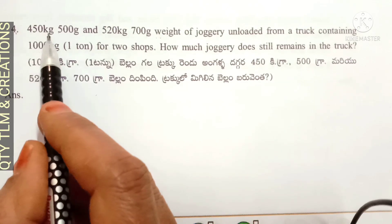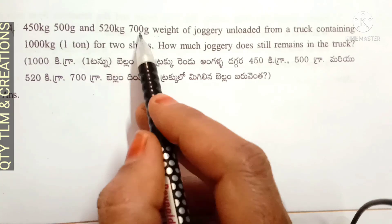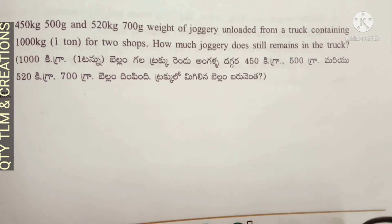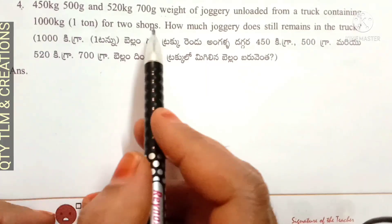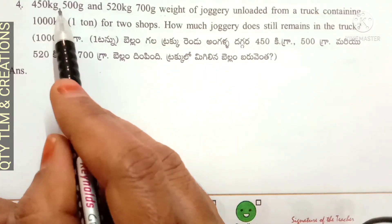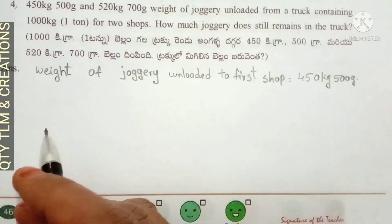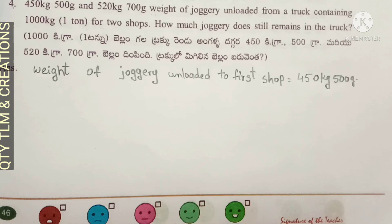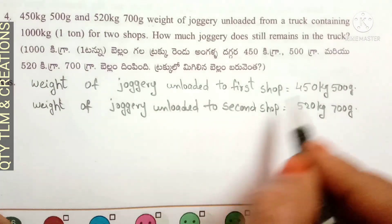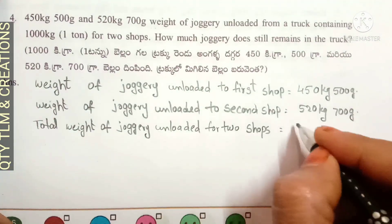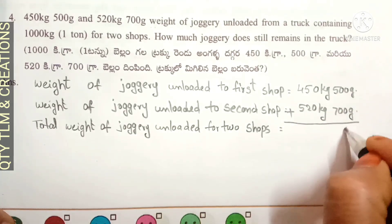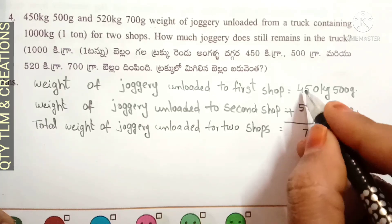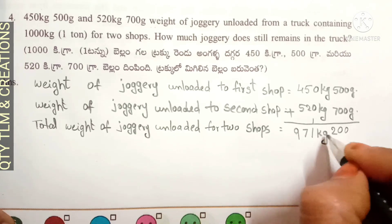Next question: 450 kg 500 g and 520 kg 700 g of jaggery were unloaded from a truck containing 1000 kg for two shops. How much jaggery still remains in the truck? Weight of jaggery unloaded to the 1st shop is equal to 450 kg 500 g. Weight of jaggery unloaded to the 2nd shop is equal to 520 kg 700 g. Total weight of jaggery unloaded for 2 shops — adding: 5 plus 7 is 12, carry 1; 5 plus 2 is 7; 4 plus 5 is 9 — total is 971 kg 200 g.